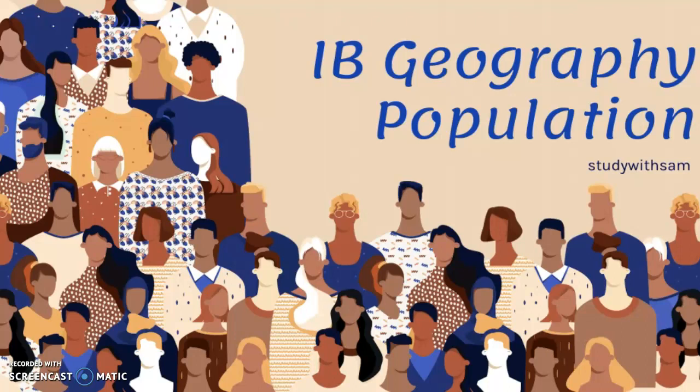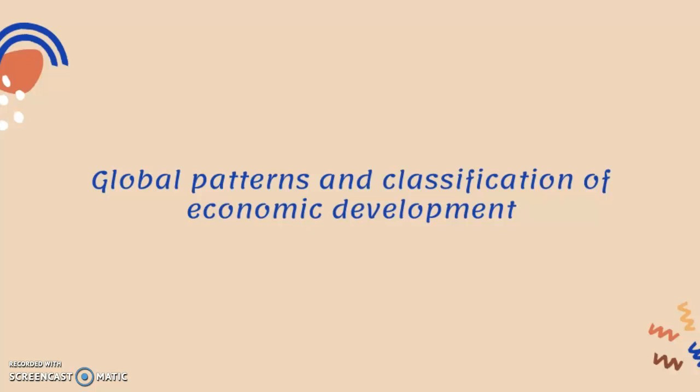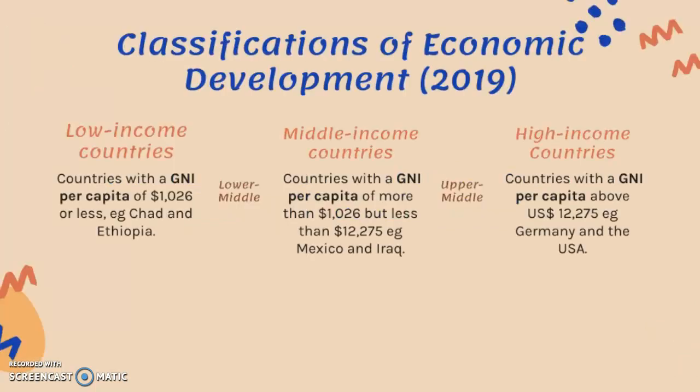This video is the first part of population for IB Geography on global patterns and classification of economic development. Basically, what you need to know are the classifications — these are from 2019 — and you should have a rough idea of the GNI per capita values for each category.